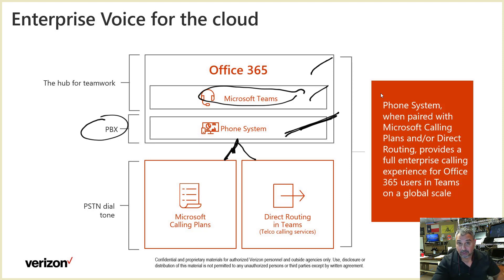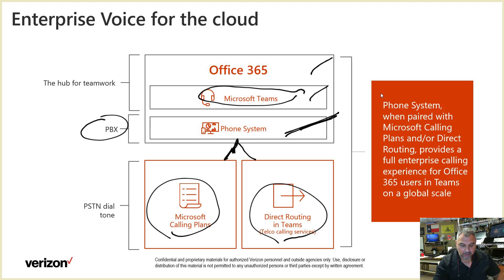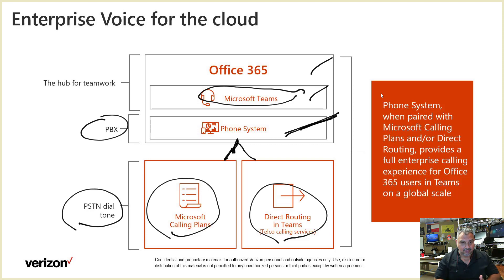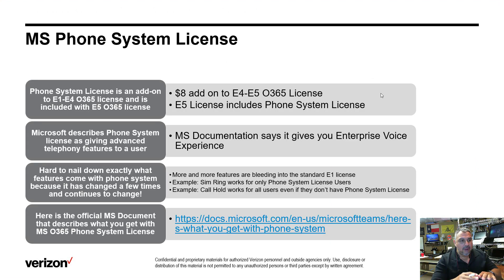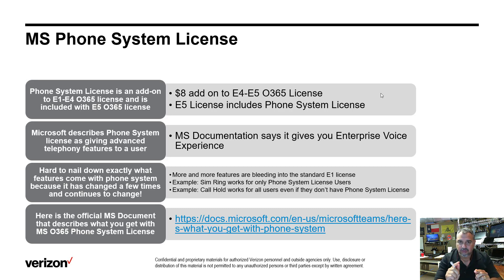Underneath Phone System, we have two ways to go — or we can do both at the same time. We can use Microsoft Calling Plans and we can use Direct Routing. Both allow us to call PSTN phone numbers.